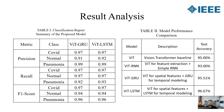The confusion matrix provides the class-wise performance of the models. You can observe that ViT-LSTM shows fewer misclassifications compared to ViT-GRU. Most confusion occurs between pneumonia and other classes, as their visual patterns are quite similar. Overall, ViT-LSTM demonstrates superior capability in identifying COVID-19 and pneumonia with high precision.